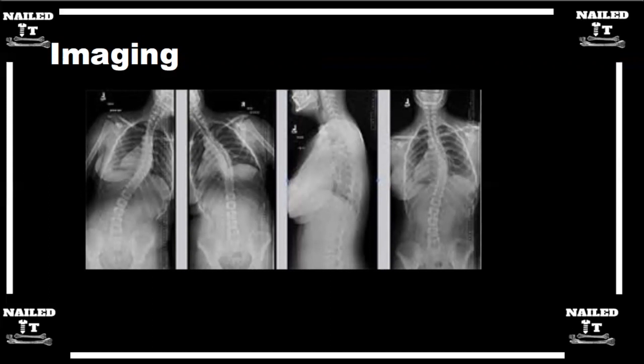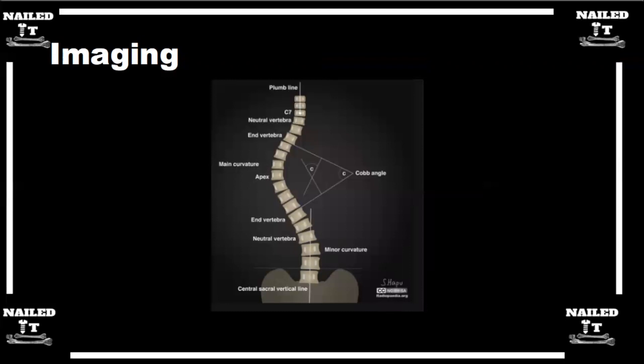The first thing that I draw on any X-ray is the center sacral vertical line. The center sacral vertical line is a line that bisects between the sacral facets and it just goes straight up on the X-ray. The reason I want to draw that is because that center sacral vertical line tells me where the center of that patient's universe is. The center of the universe is that central sacral vertical line, CSVL we call it.